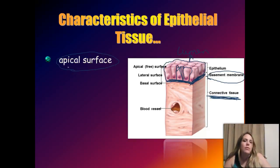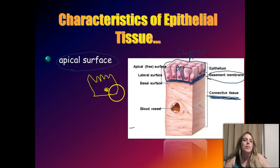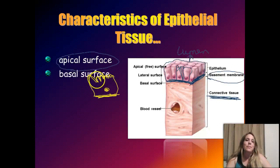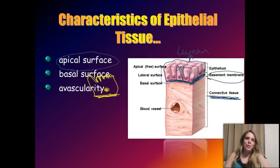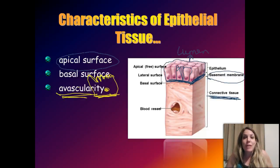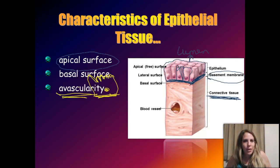The apical surface is the side that controls what goes in and out of the epithelial tissue layer, while the basal surface is stuck to the basement membrane. Another characteristic of epithelial cells is that they are avascular — 'a' meaning not, so there are no blood vessels supplying the epithelial layer.